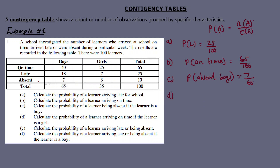D: calculate the probability of a learner arriving on time if the learner is a girl. We focus only on girls. On time for girls is 25, out of a total of 35 girls. So the probability of on time given girl equals 25 over 35.